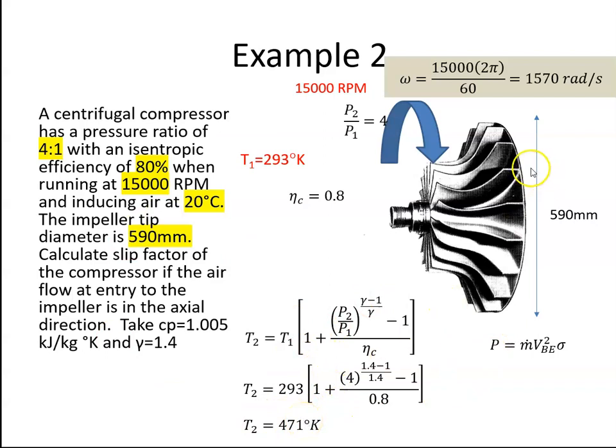Now, the power required by a centrifugal compressor is the mass flow times the velocity of the blade exit squared times the slip. The question asks us to calculate the slip, so we're going to need this expression.